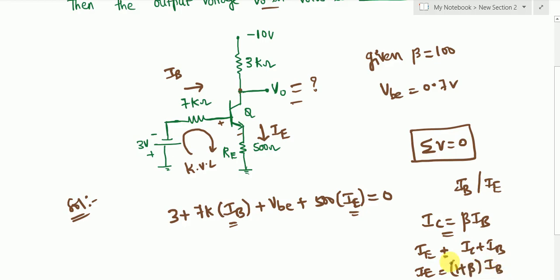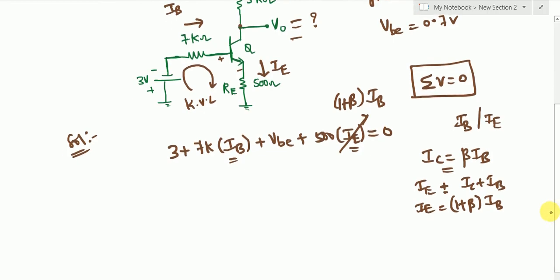So now what I'm going to do is in place of IE, I'm going to write (1 + β)·IB. Now all things are known in this equation. So now it will be easy for us to solve this. So 3 + 7000·IB + VBE, which means 0.7 volts, plus 500 into β is given as 100, so 101 times IB = 0.